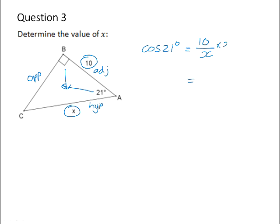If we want to solve for x here, we need to multiply both sides by x. So we get x cos 21 is equal to 10. And now we divide both sides by the cos of 21 in order to get the value for x.